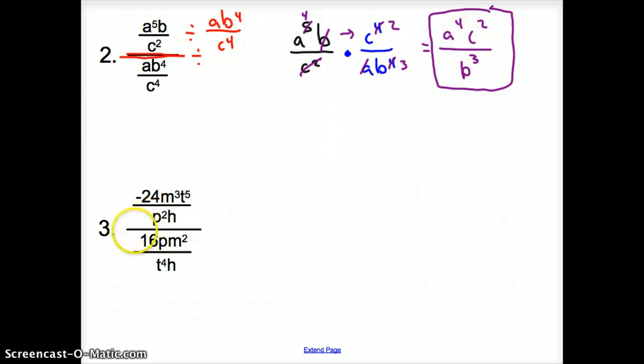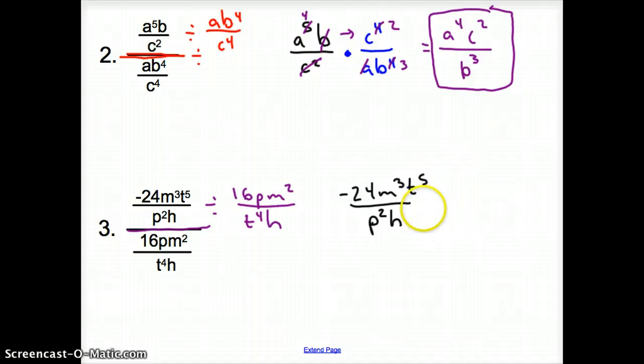Again, with three, what does this division bar mean? It means divide, so we're going to bring the bottom fraction up. So it's 16 p m squared over t to the fourth h. So now I'm going to rewrite it again. We have negative 24 m cubed t to the fifth over p squared h, and then I'm taking this times now the opposite, the reciprocal of this. So it's t to the fourth h over 16 p m squared.